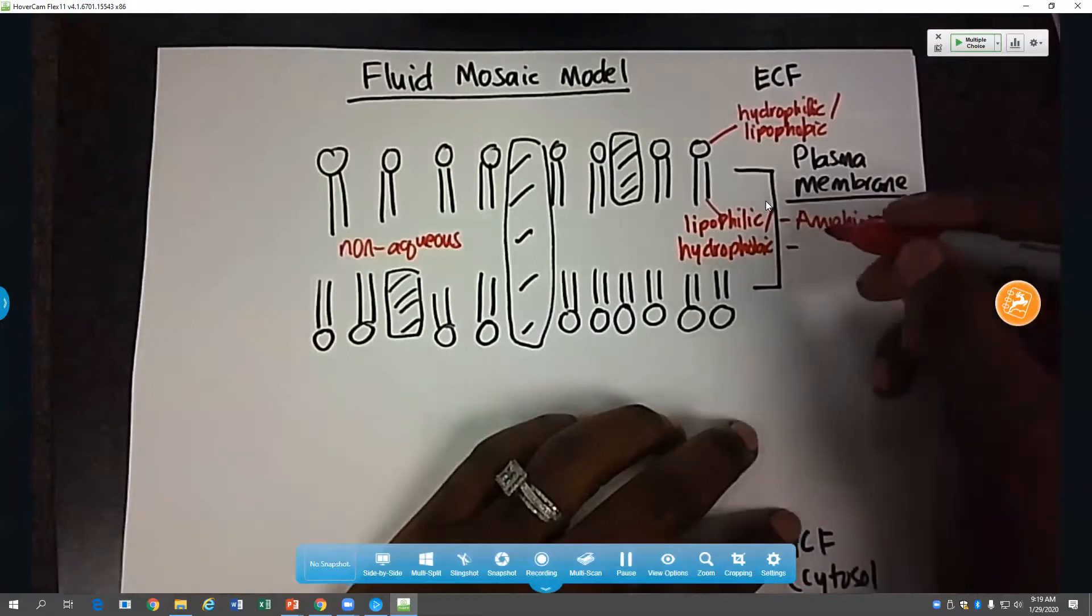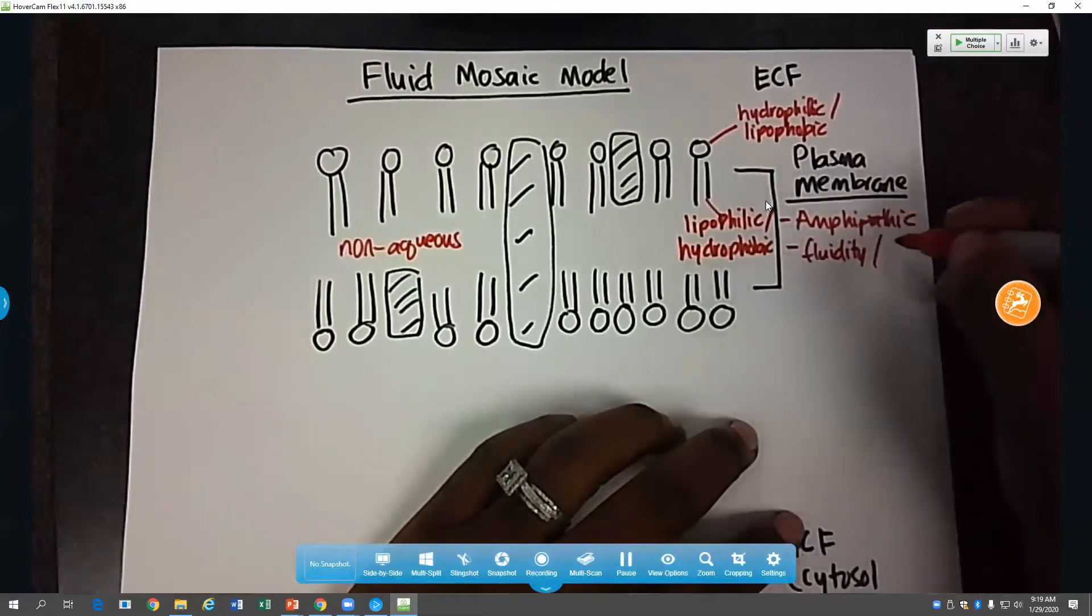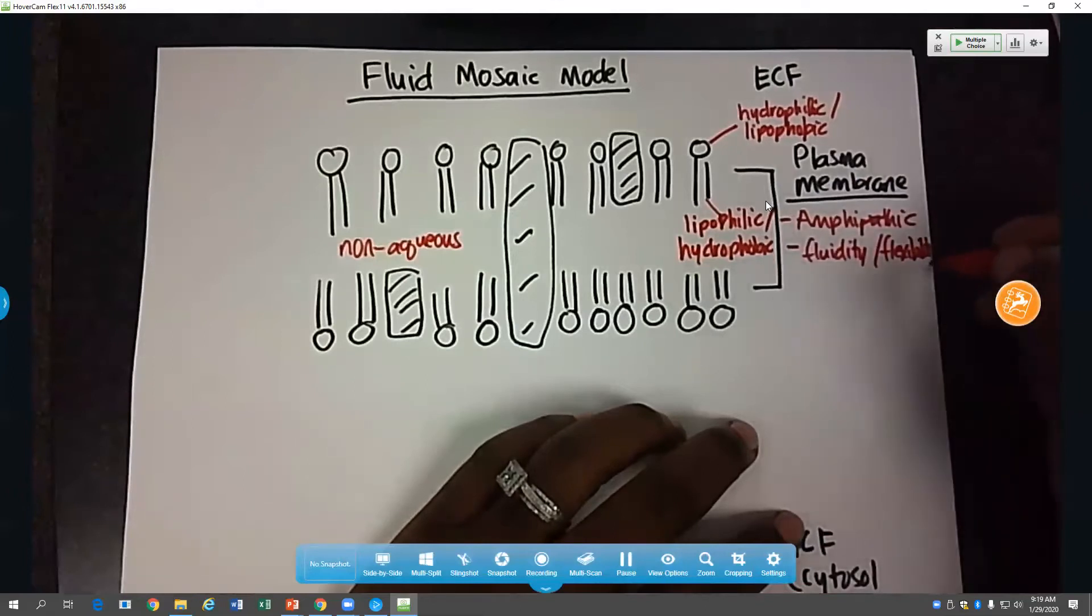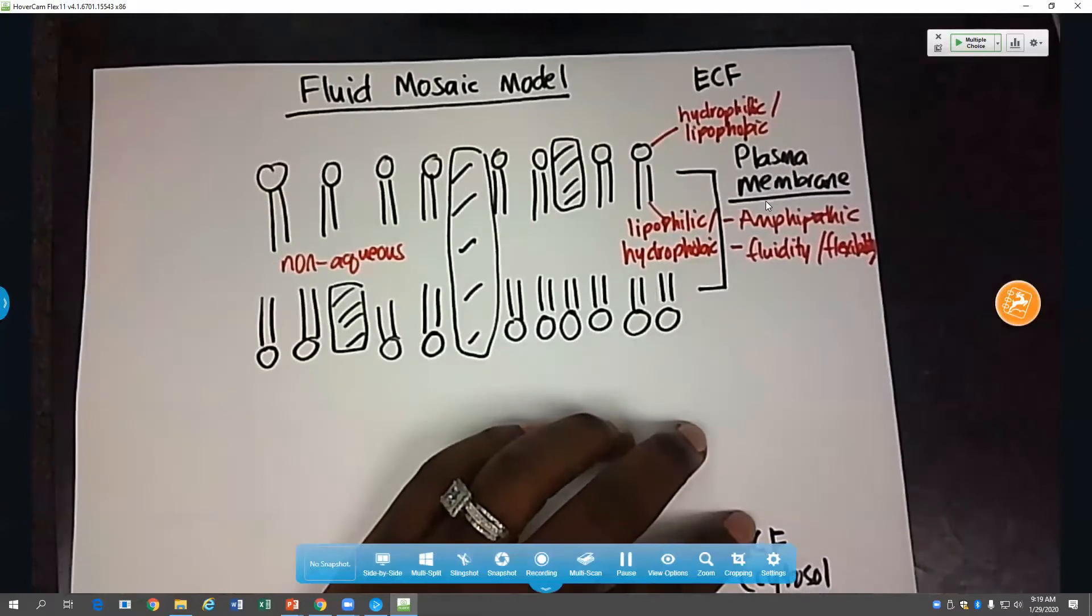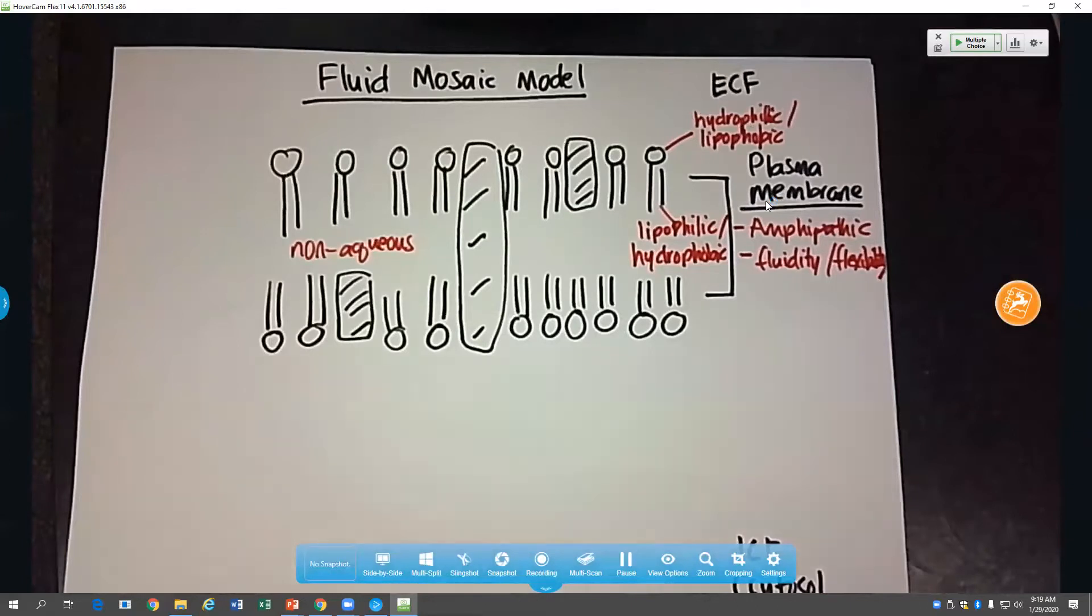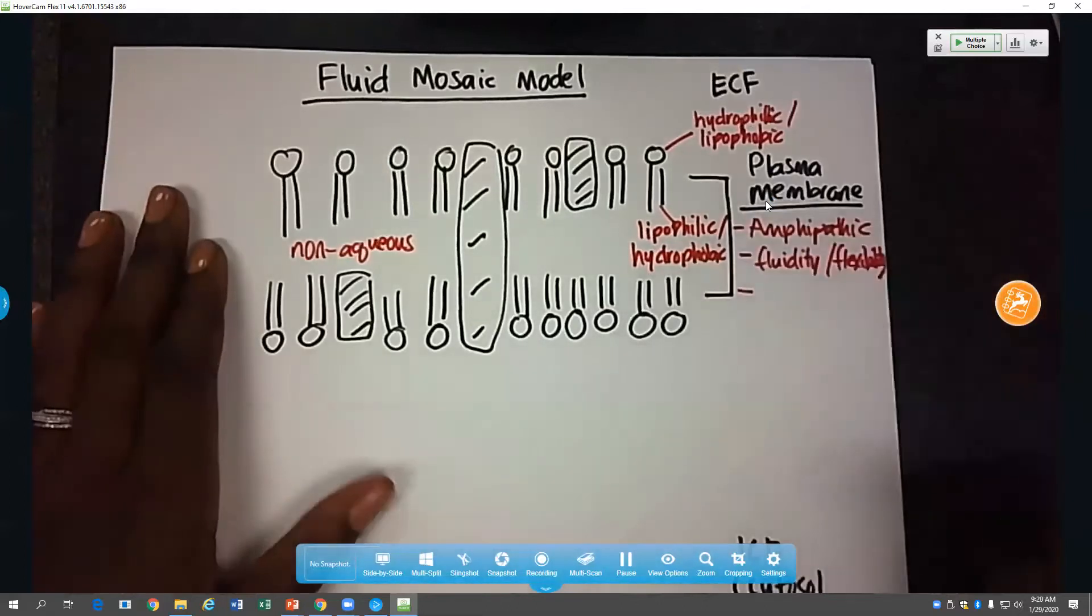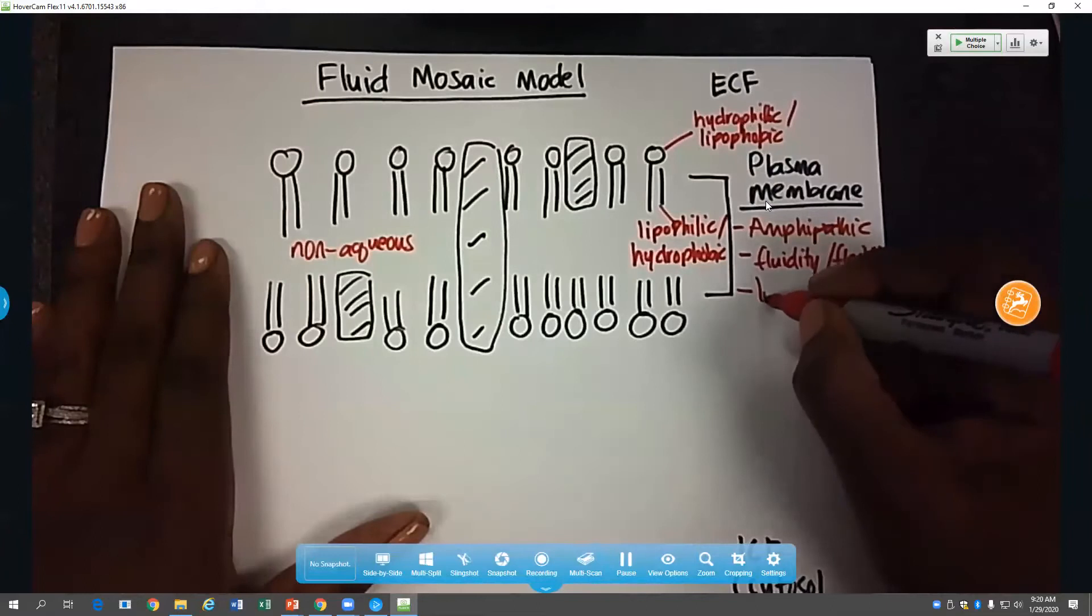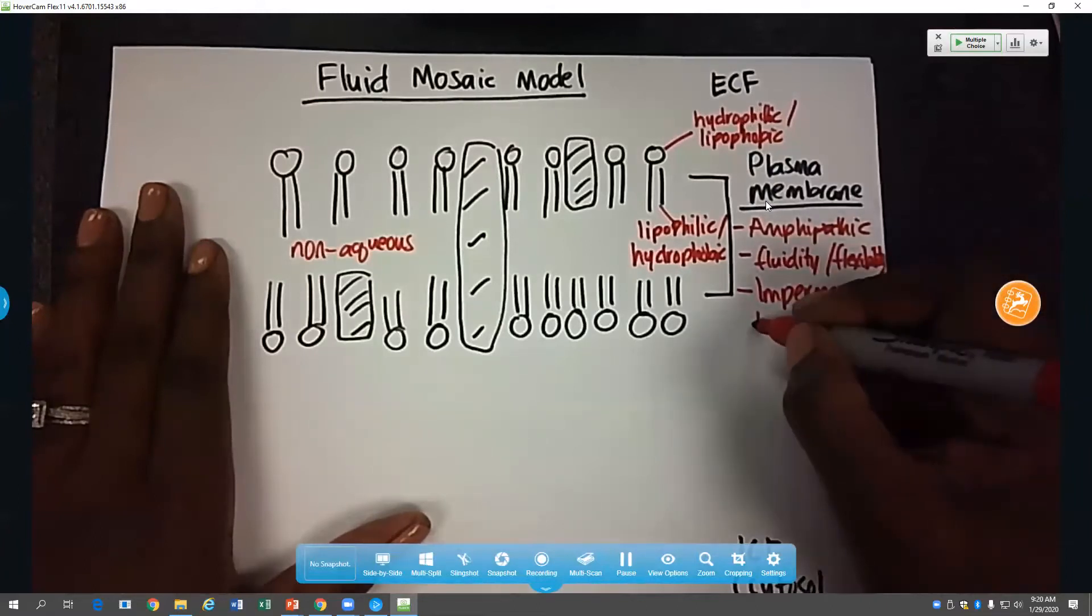The second property is the fact that it allows fluidity and flexibility. And again, we don't want a rigid fixed membrane. We want something that is malleable, that is flexible, that is fluid.